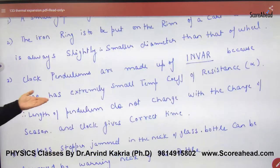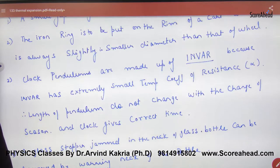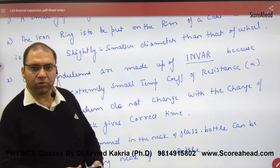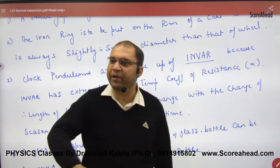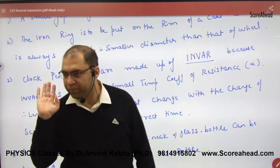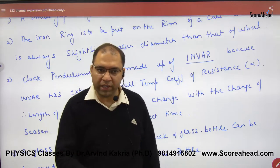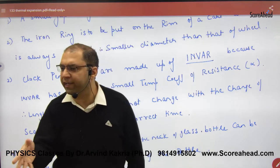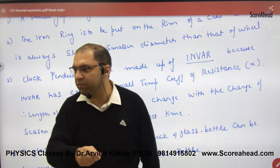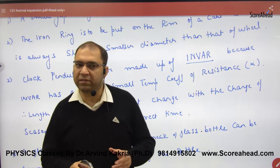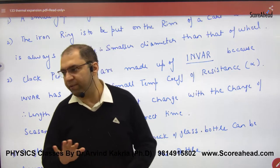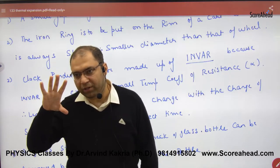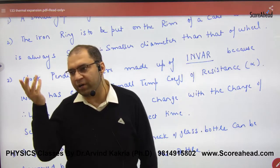Next, an important application: pendulum clocks are made of Invar material. The time period of a pendulum clock is given by T = 2π√(L/G). When it is very warm, the length L will increase, so the time period 2π√(L/G) will also increase — meaning the clock runs slow.